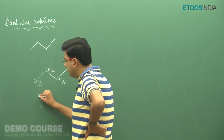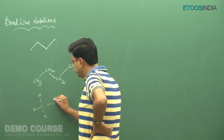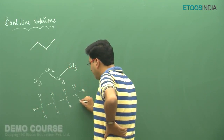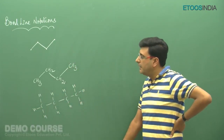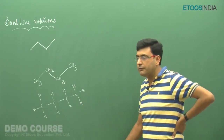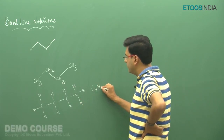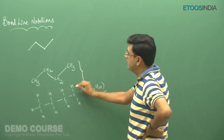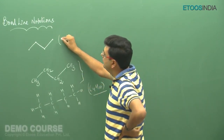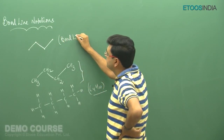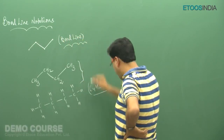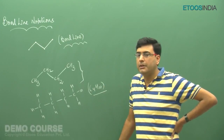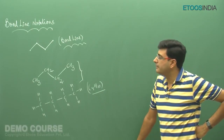So the zigzag structure represents CH3-CH2-CH2-CH3, which is the butane molecule. More precisely, there are 4 carbon atoms and 10 hydrogen atoms. The molecular formula of this compound is C4H10. This is the molecular formula, while the Lewis-type structure is the structural formula, and the zigzag line is the bond line notation.